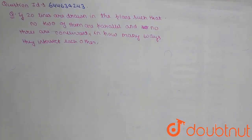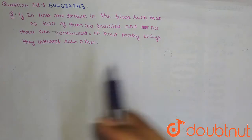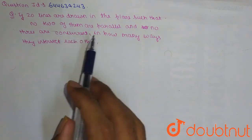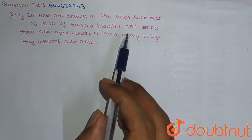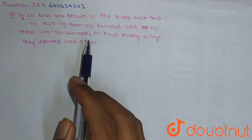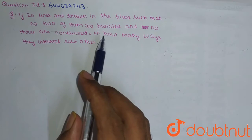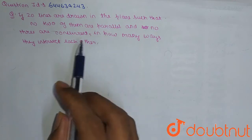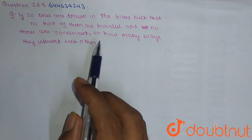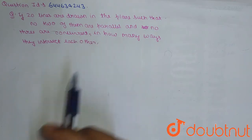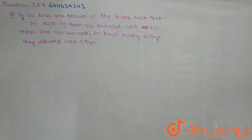Our question is of permutation and combination. The question says: if 20 lines are drawn in a plane such that no two of them are parallel and no three are concurrent, in how many ways do they intersect each other?